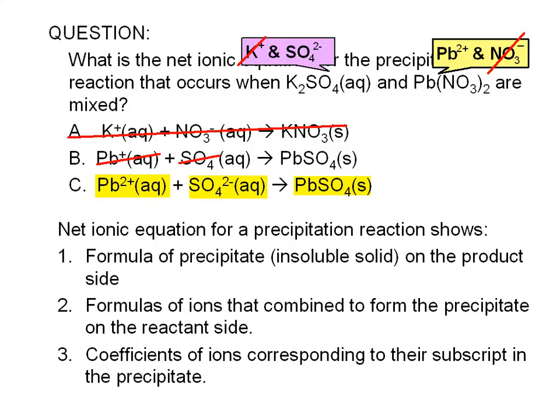So, no coefficients are written in front of lead and sulfate ions. Remember that coefficients that are not written are implied to be 1.